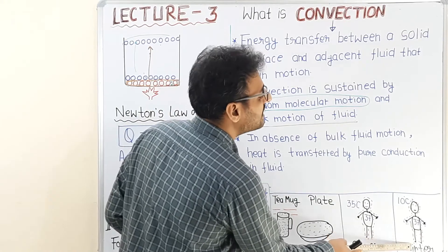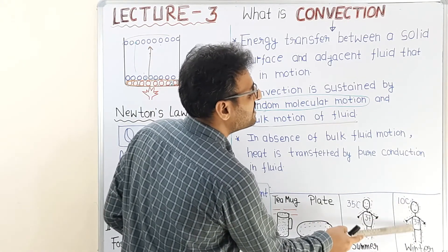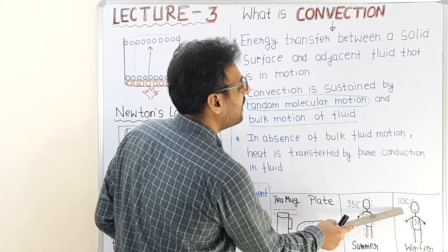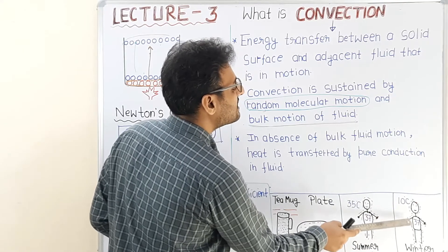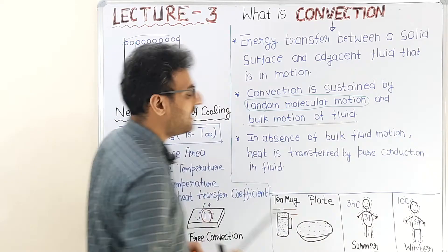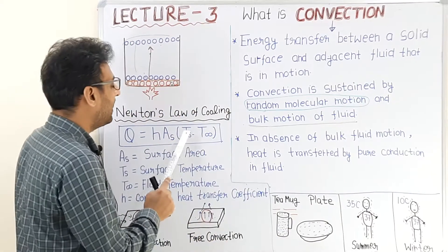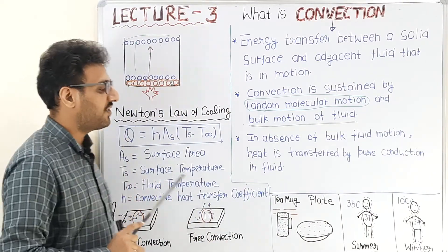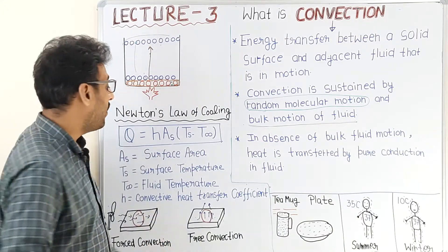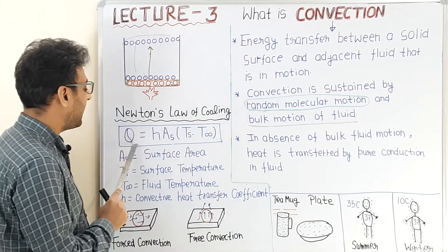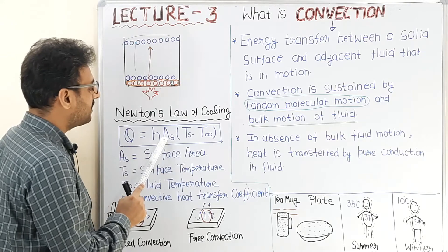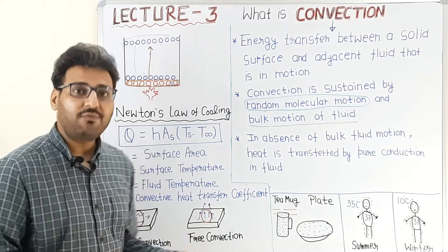Due to metabolism, there is continuous generation of heat in the human body, so it should be removed continuously at the same rate it is generated, otherwise we feel discomfort. In summer season we feel discomfort because the rate of heat transfer from our body is less compared to the rate generated due to metabolism — Ts minus T∞ is less, hence heat transfer rate is less. In winter, the temperature difference is larger and Ts minus T∞ is about 27°C, so the heat transfer rate from the human body is fast.